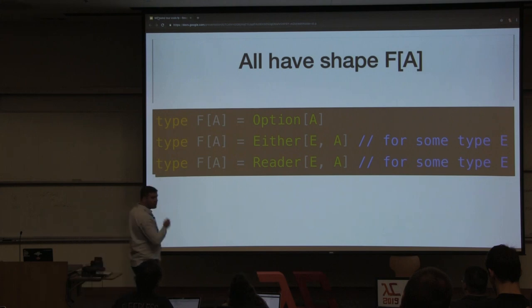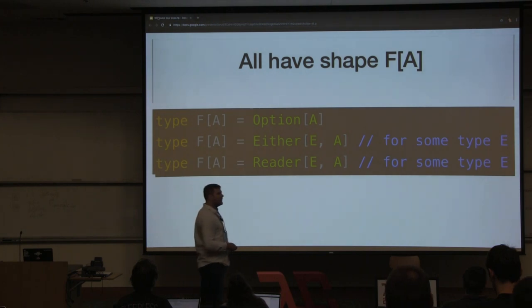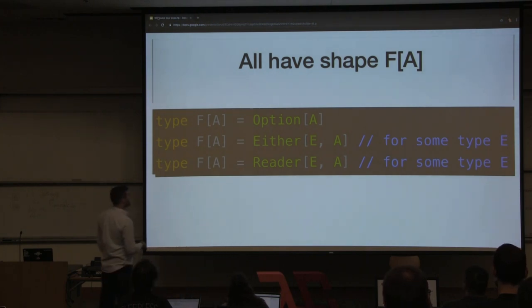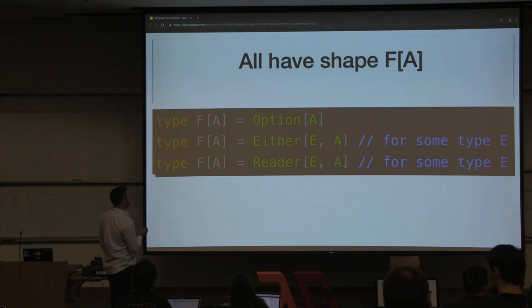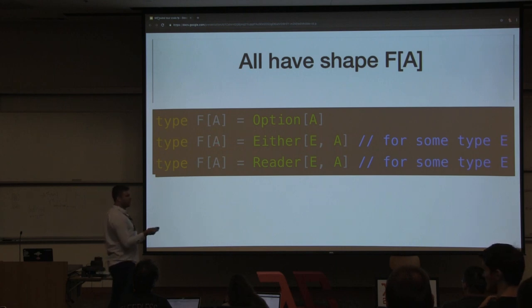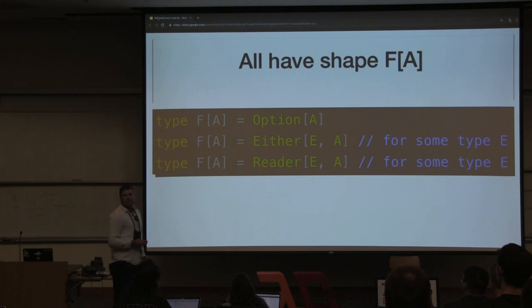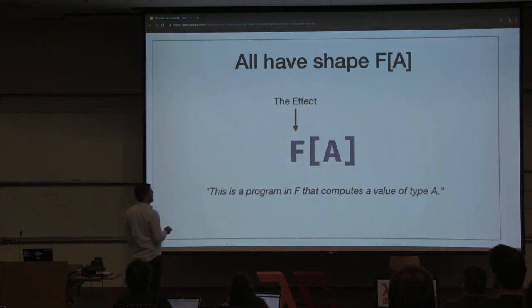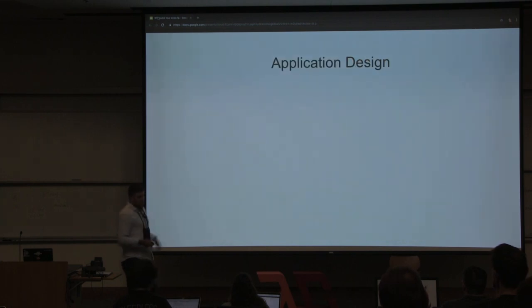Does anyone have questions on that? Someone asked whether 'shape' is a context or a visual thing. The proper term is probably 'kind.' The kind of Option is star-to-star, meaning it takes one other type. Either has kind star-star-to-star, and we turn it into a star-to-star by providing the first type. So 'kind' is the proper term, though I'm going to keep saying 'shape.' F in this case is the effect — we want an A and there are effects that are going to happen to give me that A.